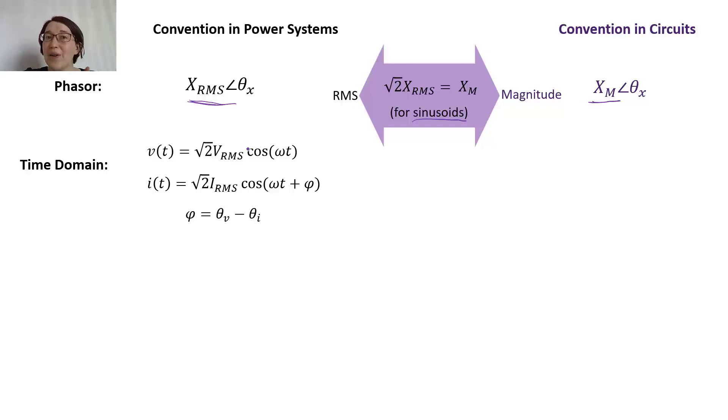If you look at the video where we derived the instantaneous and average power in power systems, we use this setup. However, in circuits we may use a slightly different setup. Ultimately these are actually the same but they're just different notations. So I just don't want you guys to get confused.